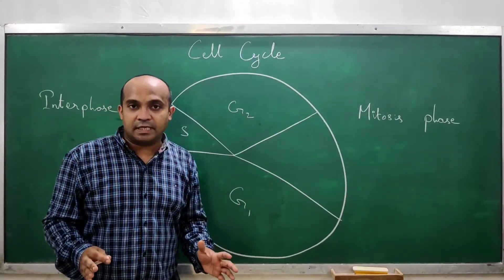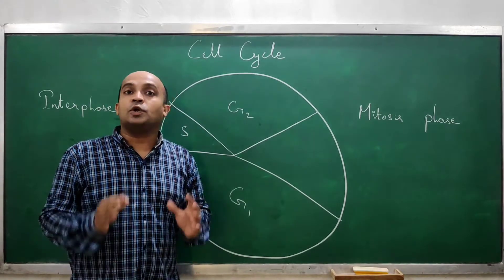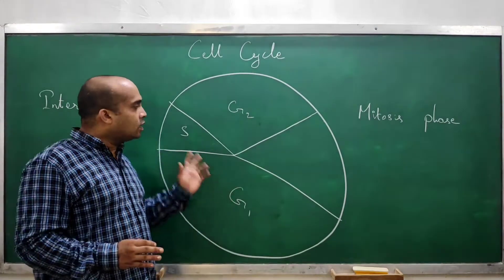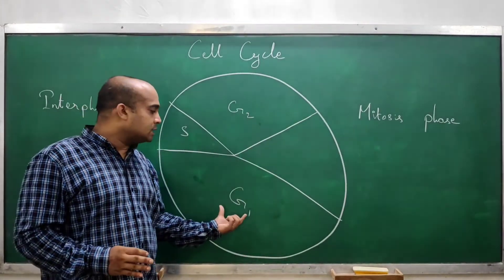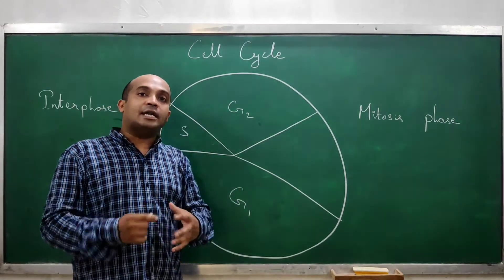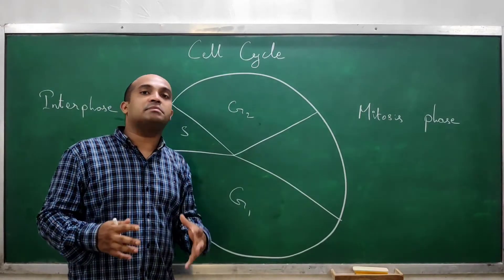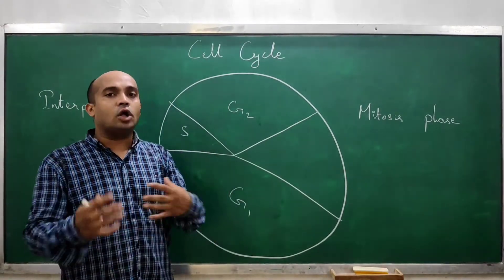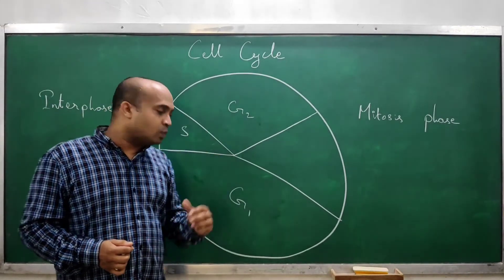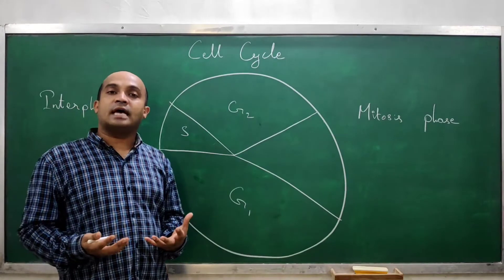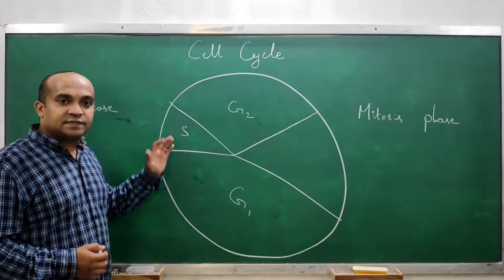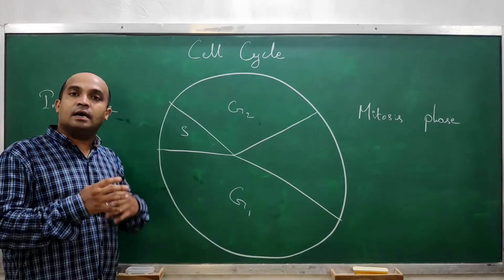G1 stands for Gap 1 phase, but it is also called the growth phase, wherein cell growth is occurring. That is why it takes the longest time in the whole cell cycle. In G1 phase, cytoplasmic content is increasing — chemicals, water content, all this content is increasing. Daughter cells are smaller in size, but after G1 phase their size increases.